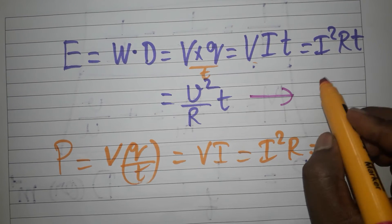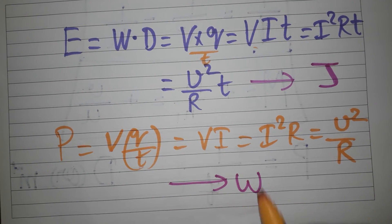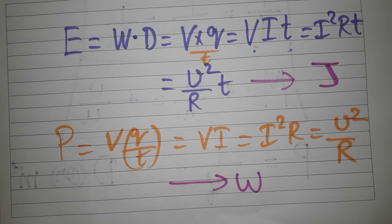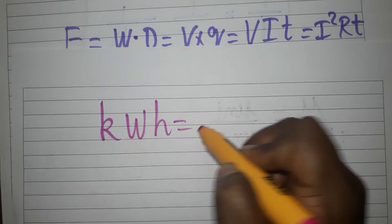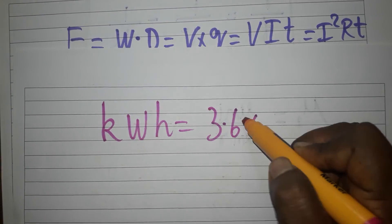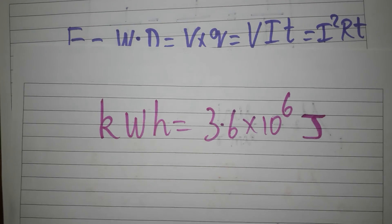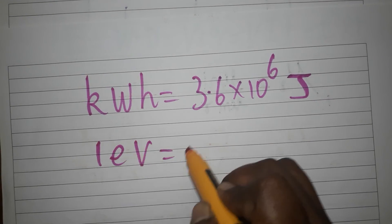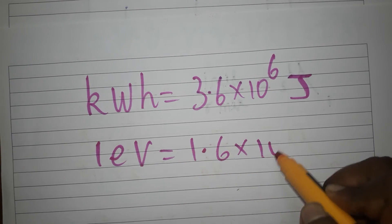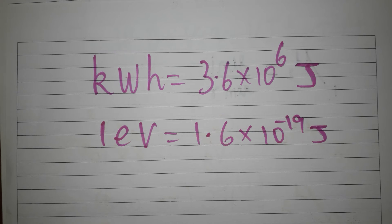Unit of energy is joules, unit of power is watts. One kilowatt-hour (1 kWh) is equal to 3.6 times 10 to the power 6 joules. One electron-volt (1 eV) is equal to 1.6 times 10 to the power minus 19 joules. These are basic energy unit conversions.